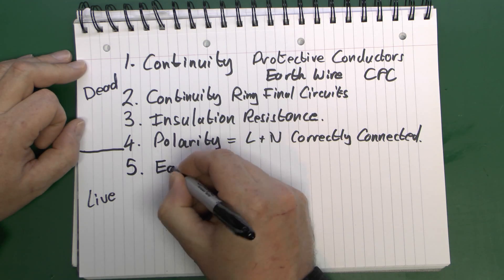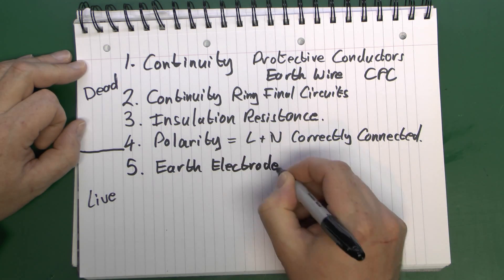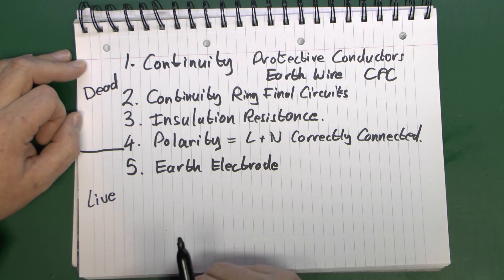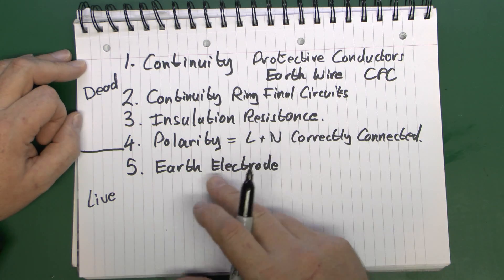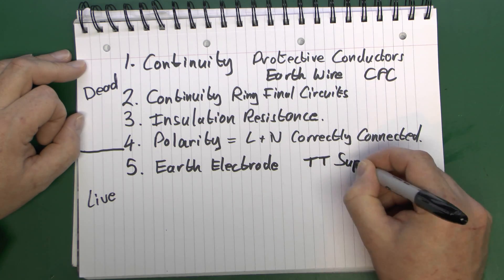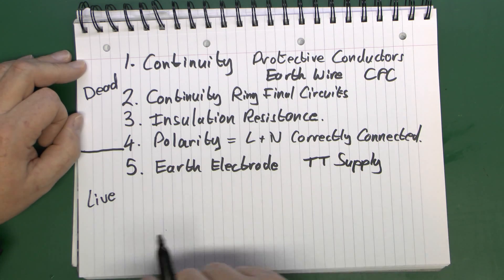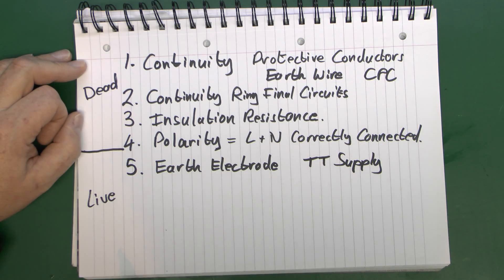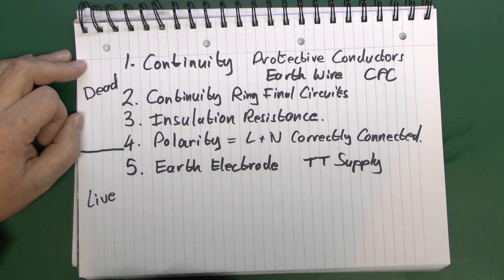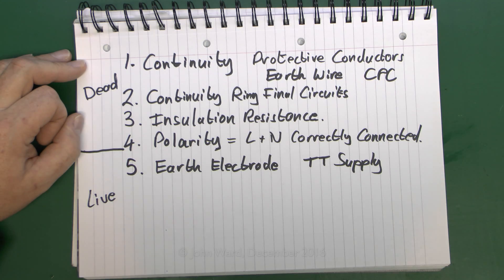Test five is earth electrode. This only applies if you actually have one — the majority of new installations in the UK do not. It's only going to be applicable if you have a TT type of supply, essentially where you don't get an earth from the electricity supplier and you have to provide your own electrode in the ground. That does need to be tested to make sure it's of suitable quality and has been installed correctly. There are a few ways it can be tested, one of which does involve using the power that's already been connected.